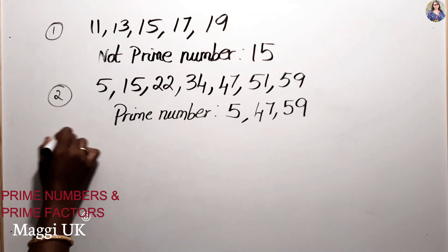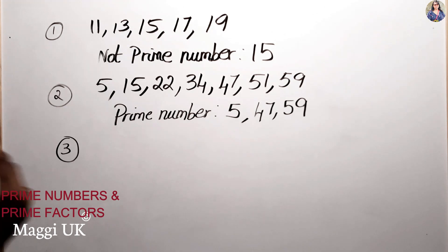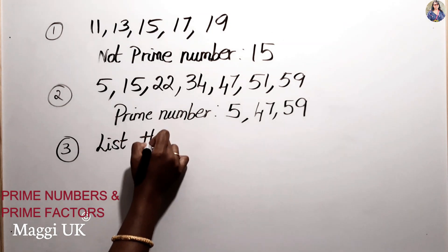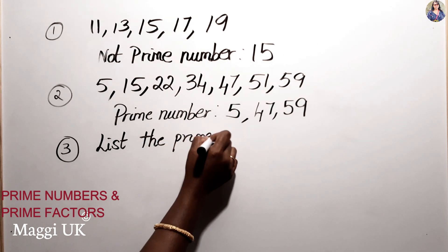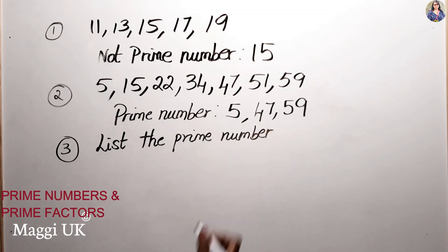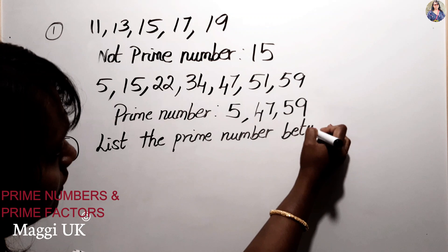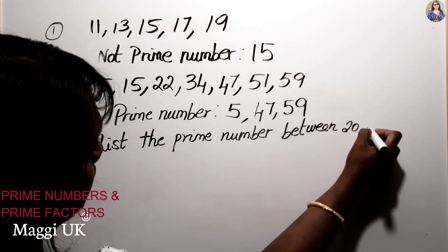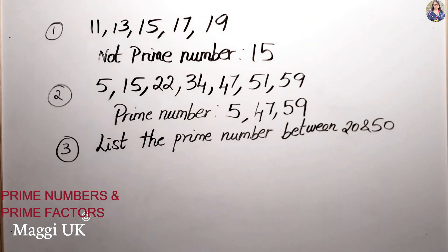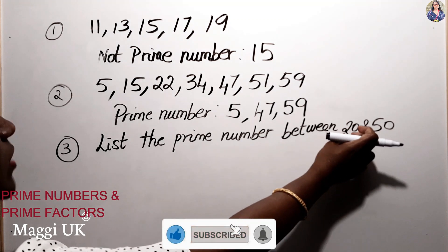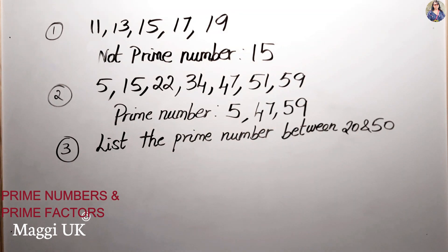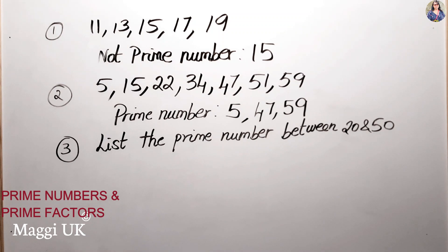Now another example: list the prime numbers between 20 and 50. So that means not including 20 or 50 — only the values in between. So 21 — is that a prime number? It's not a prime number because it's divisible by 7 and 3, not by itself or 1 only.